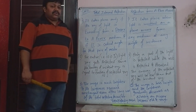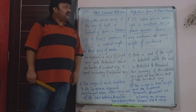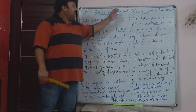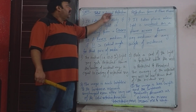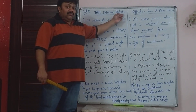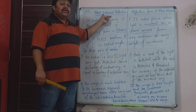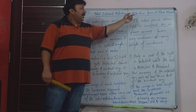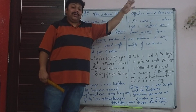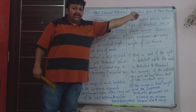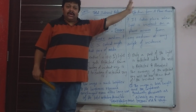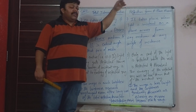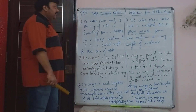So now we continue with total internal reflection and see the distinction — what is the difference between total internal reflection, which usually happens with a prism, and reflection from a plain mirror. Now that every one of us knows. We all have mirrors in our house, so we know about reflection in a plain mirror.